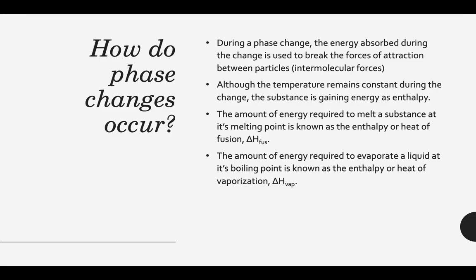How do we get these phase changes to occur? During a phase change, energy has to be absorbed in order to break the forces of attraction. What happens is energy is being absorbed, but it doesn't make the system get any warmer — all of that energy is used to break those intermolecular forces. The amount of energy it takes to melt a substance when it reaches its melting point is called the enthalpy, or heat of fusion. The amount of energy required to evaporate a liquid is known as the heat of vaporization.